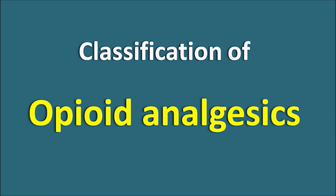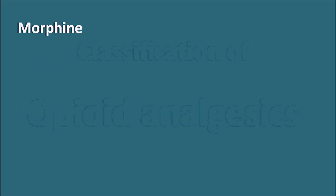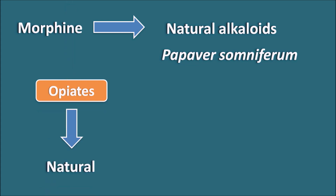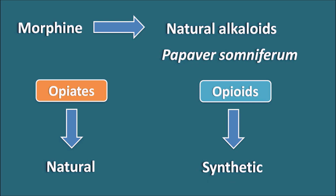Today let us see the classification of opiate analgesics. Morphine is a well-known drug in the category of opiates, and it is a natural product coming from Papaver somniferum. Along with opiates, we can use two terminologies: opiates are products obtained naturally like morphine and codeine, while opioids refers to synthetic products.